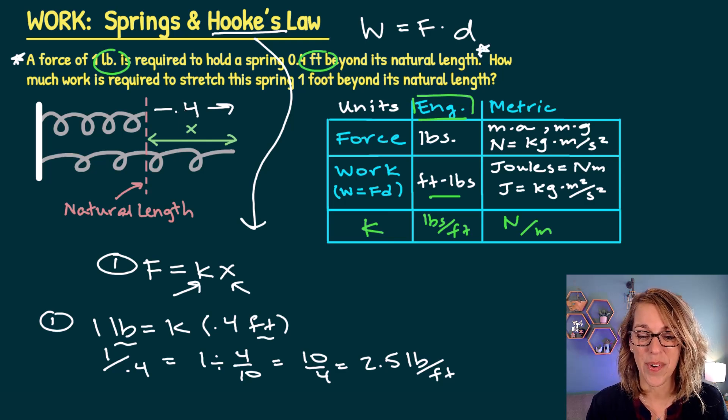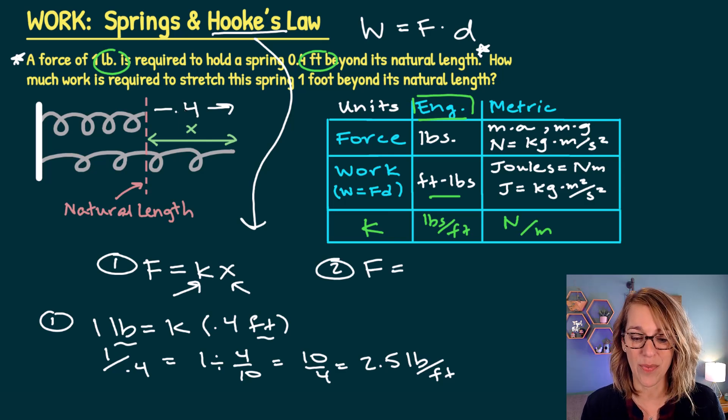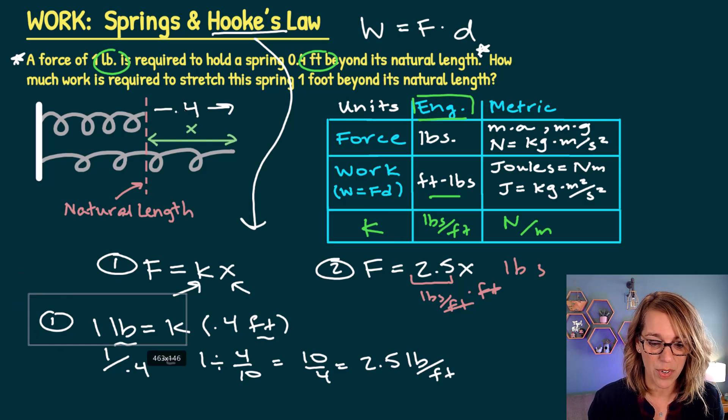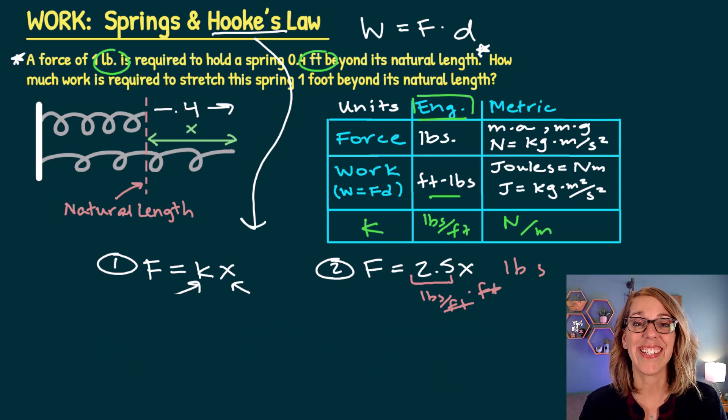Now we can take a look at the second part of this question. It says how much work is required to stretch the spring one foot beyond its natural length. We've already established that we can come up with the force based on that spring constant. So my force is given to me by this formula and that's the spring constant 2.5 times x. 2.5 is in pounds per foot and x is the distance stretched in feet. So I've got my force and it is a variable force. So instead of using work is equal to force times distance, just as that formula, I need to use the integral instead.